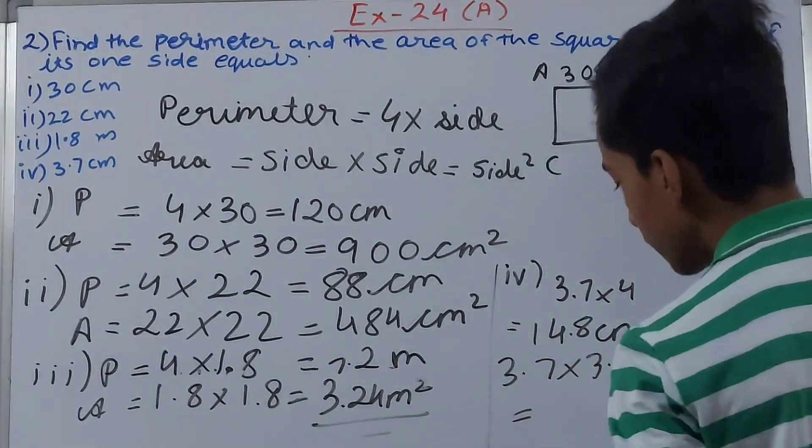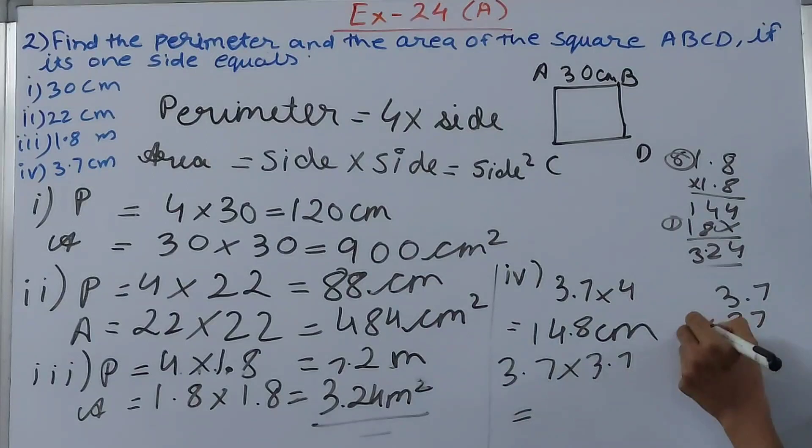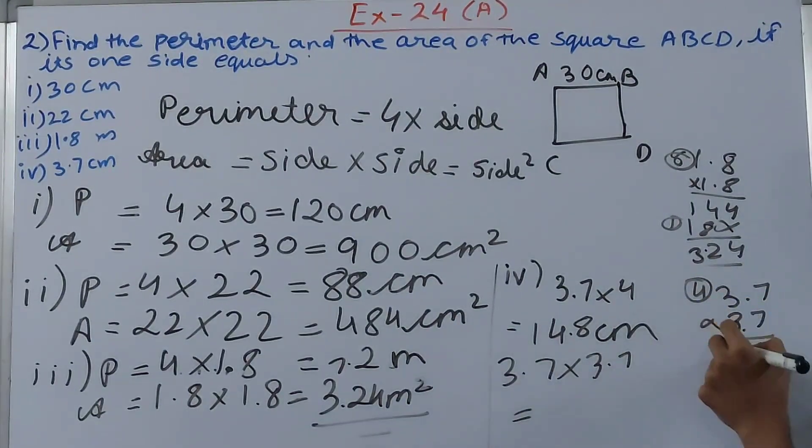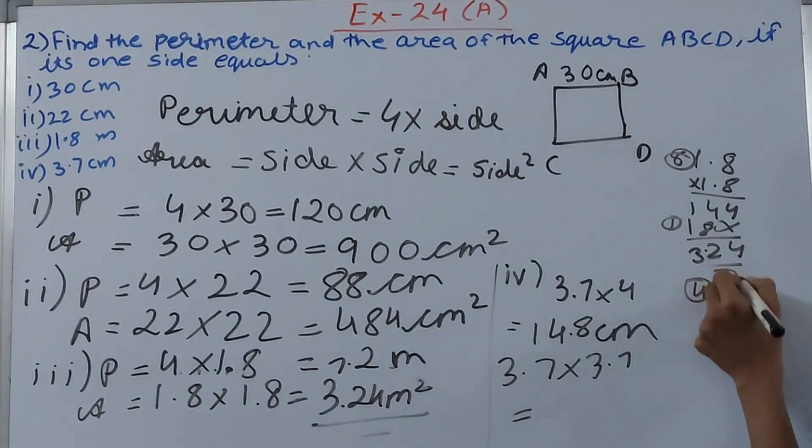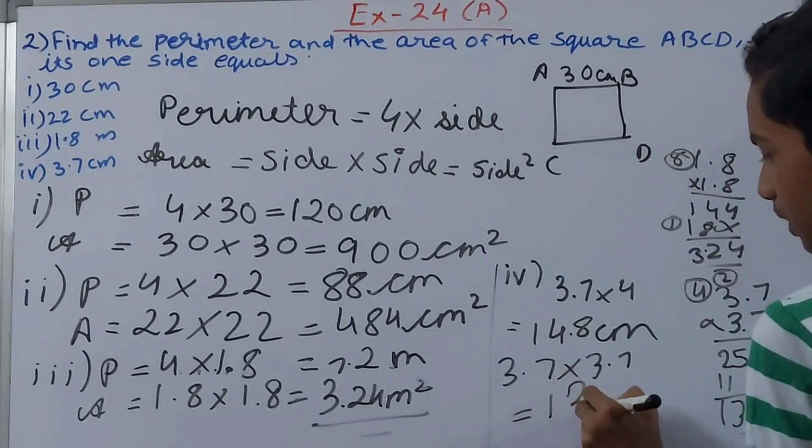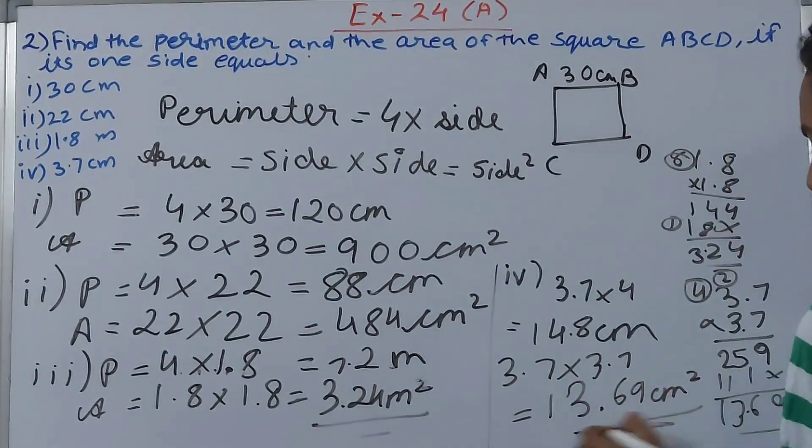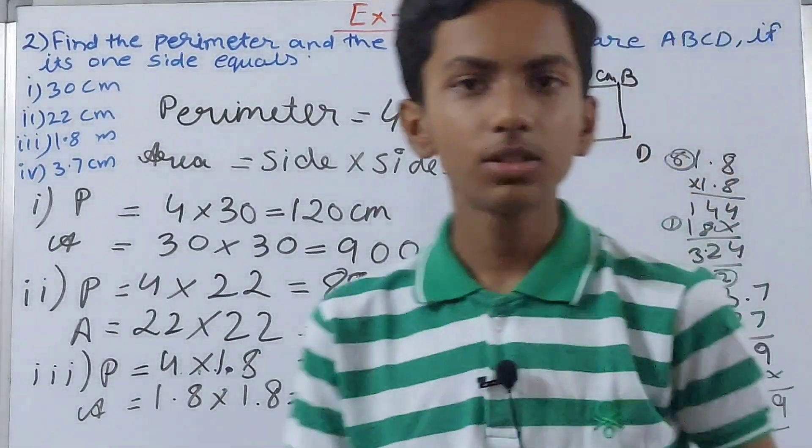Next we have the area. 3.7 into 3.7, let's see, 9 and 4, 1, 25, 1, 2, 3, 1, 11, 9, 5, 6, 3, 1, 3, 6, 9, and after two places the decimal point, so 13.69 square centimeter. This will be our area.